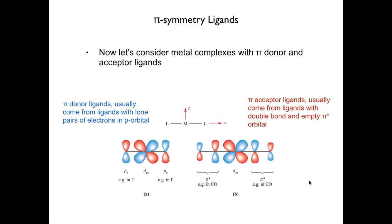To remind ourselves of these, pi donor ligands are cases where a metal d orbital accepts donation from a p or p-symmetry orbital on the ligand into the metal d orbital. A good example would be a halide — here we have a chloride bound to a metal where a lone pair in a p-type orbital can be donated to the metal, making it a pi donor ligand.